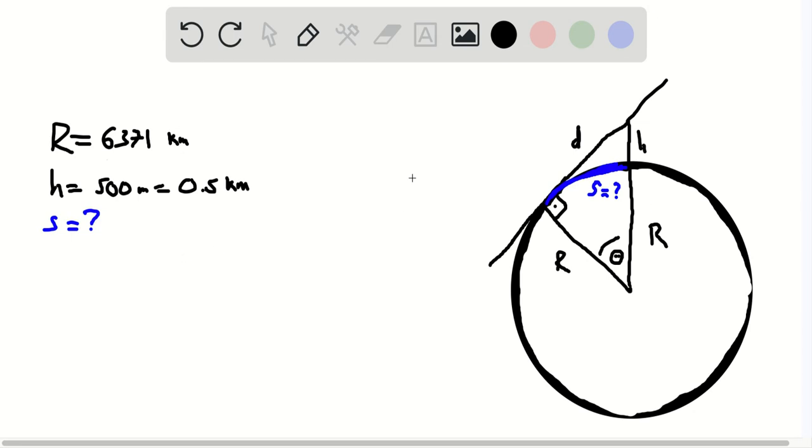And what that tells us is that this distance d squared is equal to h plus r squared times h, h plus r times h.